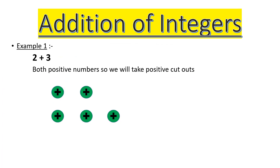Now we are going to perform examples. I'm taking the example two plus three. Both numbers are positive here. Two plus three means I need two positive cutouts for the number two, and three positive cutouts for the number three. You can see on the top two positive cutouts are there for two, and three positive cutouts for the number three.